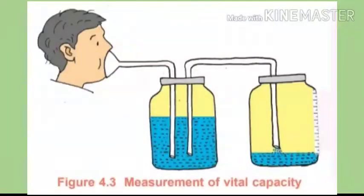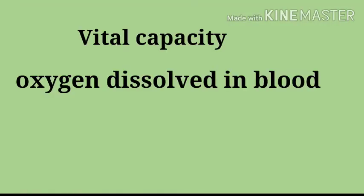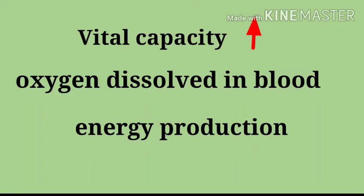Are you excited to know about your vital capacity? Arrange plastic jars and tubes as shown in the figure. After forceful inspiration, blow air forcefully into the first jar, holding the funnel around the mouth. Measure the amount of water that falls into the second jar — the volume of water will be proportional to your vital capacity. When vital capacity increases, the level of oxygen dissolving in the blood also increases, and as a result, energy production also increases.